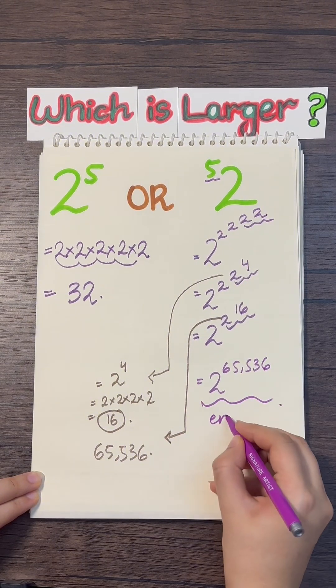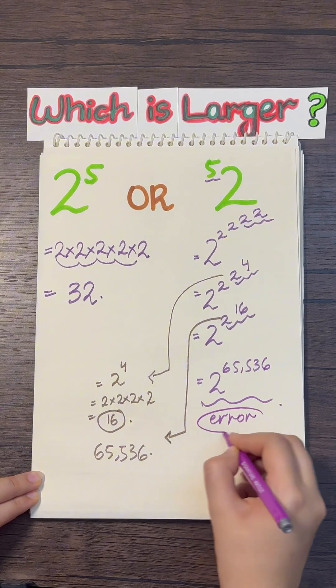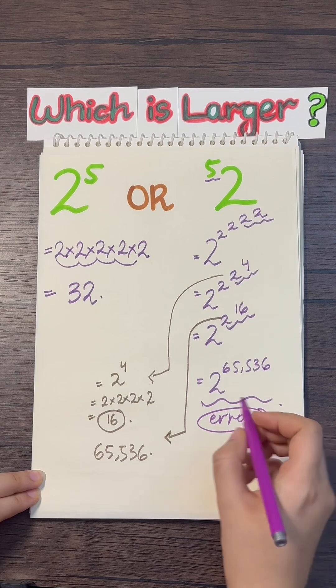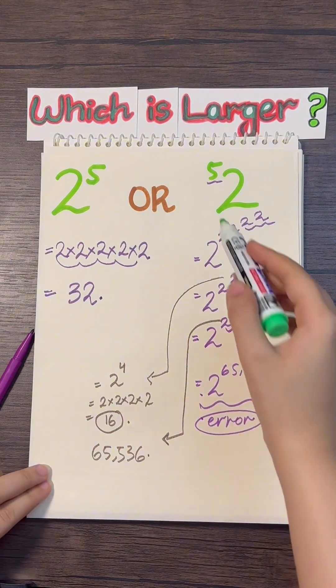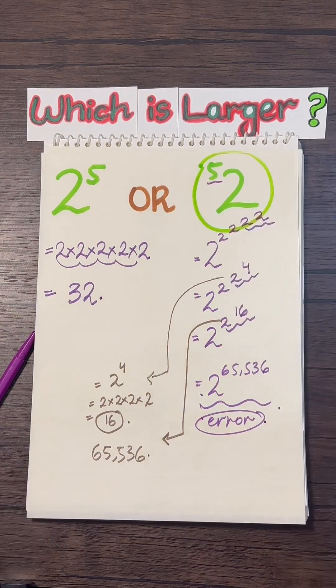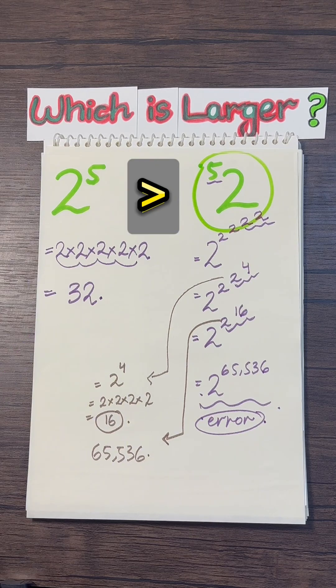This is a big number, so it gives error when put in the scientific calculator. So we're going to leave the final answer as it is here. And it is very evident that 2 to the superpower 5 is greater than 2 raised to the power 5.